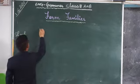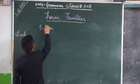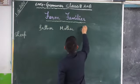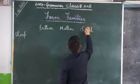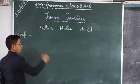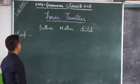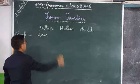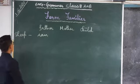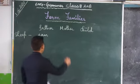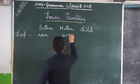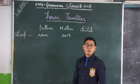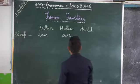Here is the sheep family — father, mother, and their child. In the family of sheep, the father is called ram, and the mother is called ewe. And the child is called lamb.